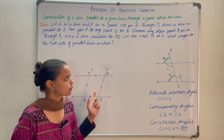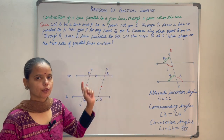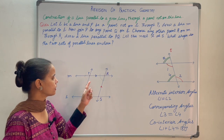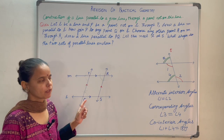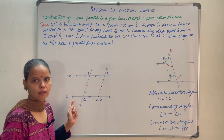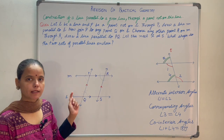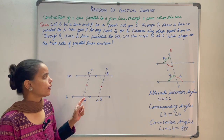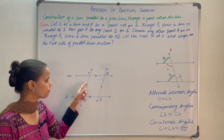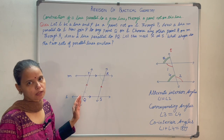Now let us come back to this question. It says let L be a line and P be a point not on L. Use your scale and draw a line L, then mark a point P which is not lying on L. You have to make a line M passing through P parallel to L. To do that, we are going to make alternate interior angles equal, so you need to make a transversal — a line passing through P and intersecting L.